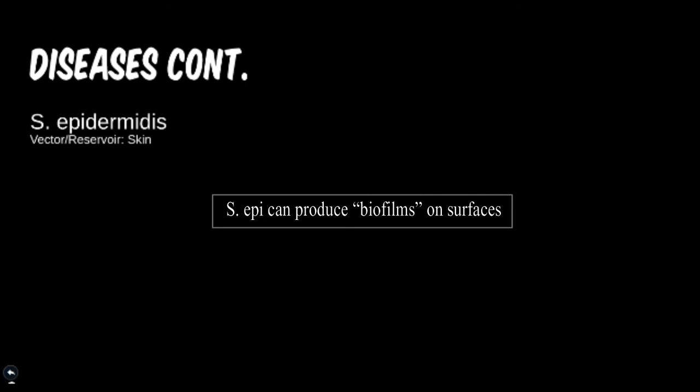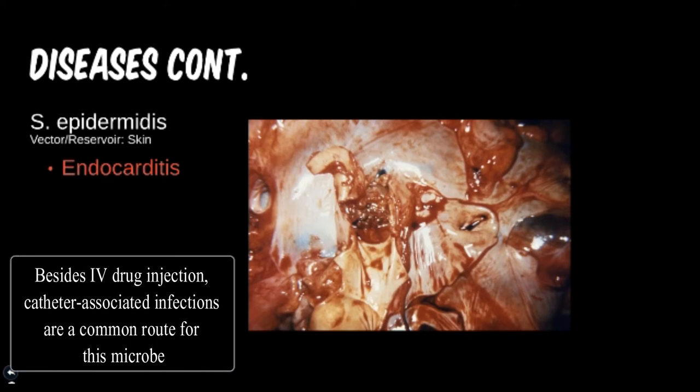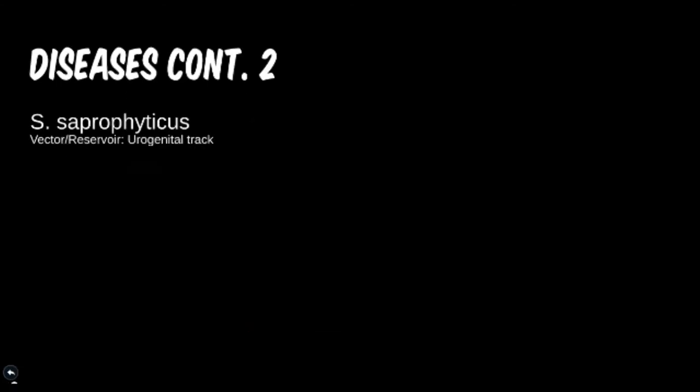Next is Staphylococcus epidermidis. Staph epi, as the name implies, likes the epidermis or the skin. We see a lot of similar superficial skin infections, but it's not as common as staph aureus and doesn't have as many important virulence factors. However, staph epidermidis is another cause of the severe cardiac disease endocarditis. A common demographic is an IV drug user, as they pierce their skin and push bacteria living on the skin surface into the tissue and bloodstream.